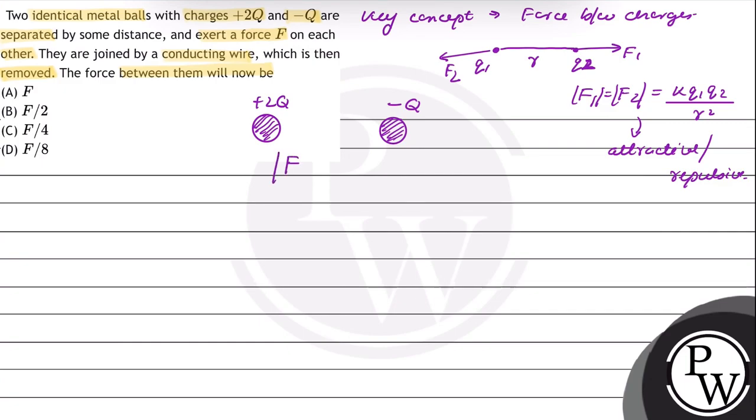The magnitude of this F force will be equal to K Q1 Q2 upon R square. Q1 ki value hai 2Q and Q2 ki value hai minus Q. So the net force will be equal to K 2Q Q upon R square. This will be equal to 2K Q square upon R square. This will be the magnitude of the force F.